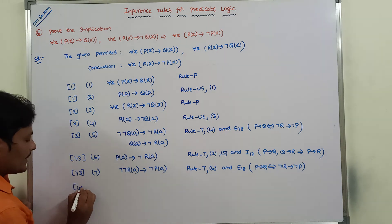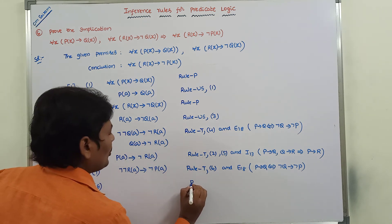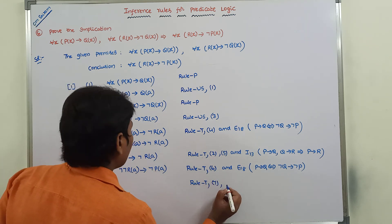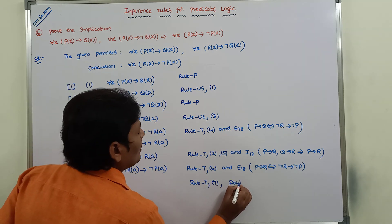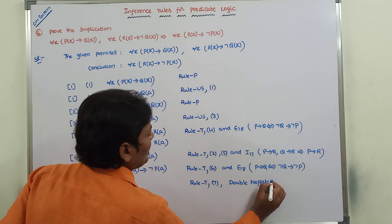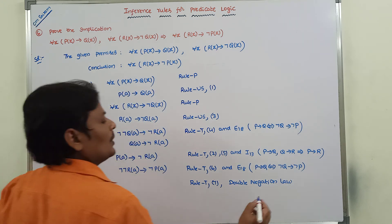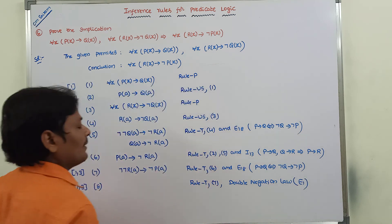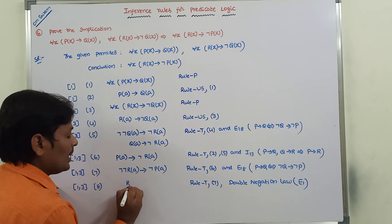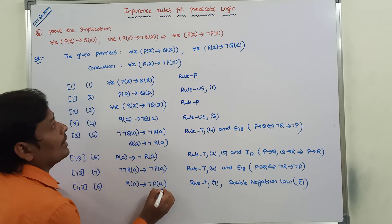Applying the double negation law — E1 — on the seventh step using Rule T: ¬(¬r(a)) is nothing but r(a). So we get r(a) → ¬p(a). This is the eighth step. Now we have already derived the conclusion in terms of the individual variable a, and we need to prefix the universal quantifier.